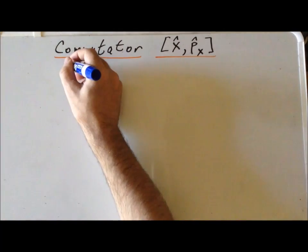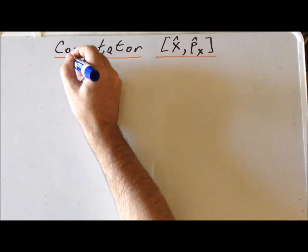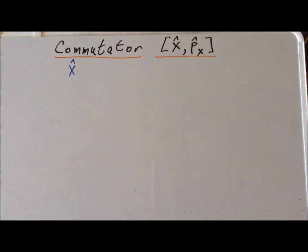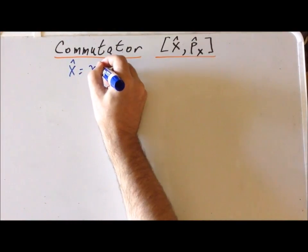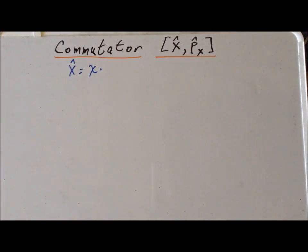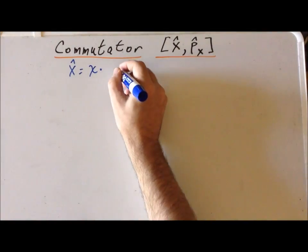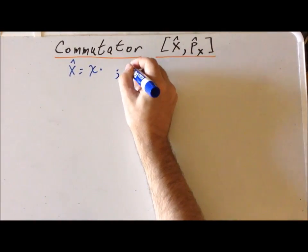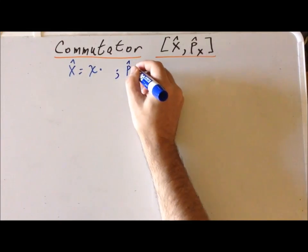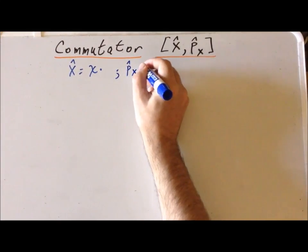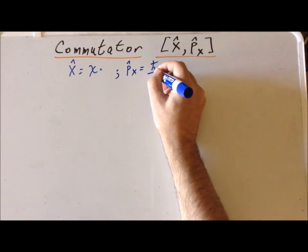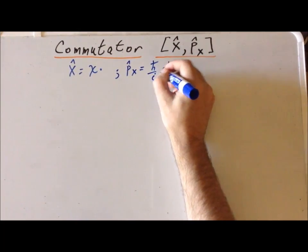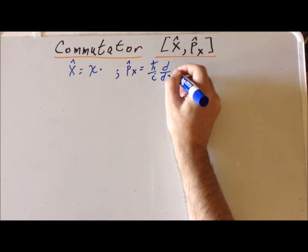Recall that in quantum mechanics, the position operator in the x direction is evaluated simply by multiplying by x. On the other hand, the linear momentum operator in the x direction has the somewhat peculiar form of h-bar over i times the first derivative with respect to x.